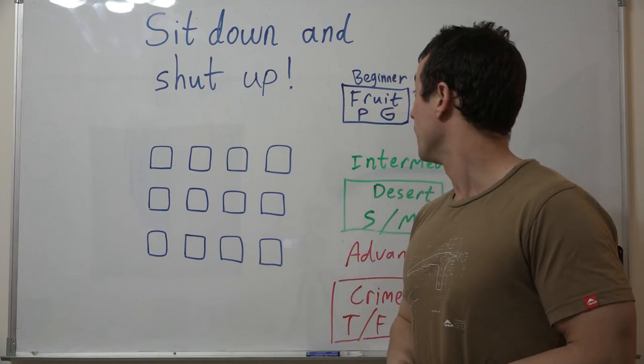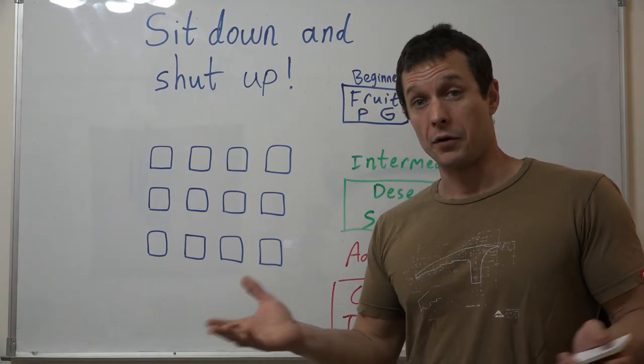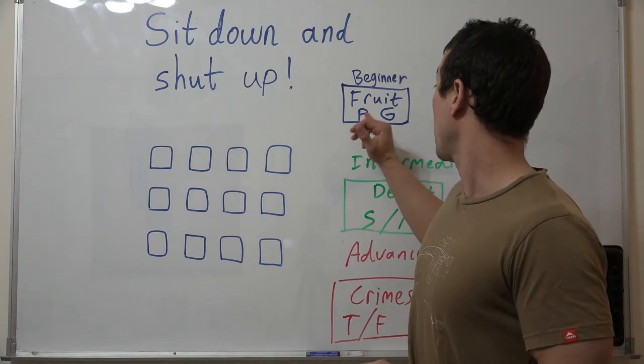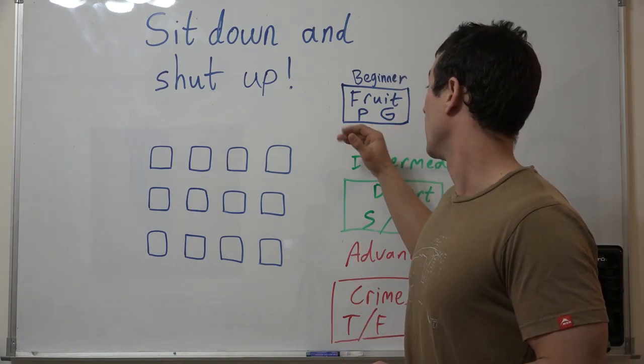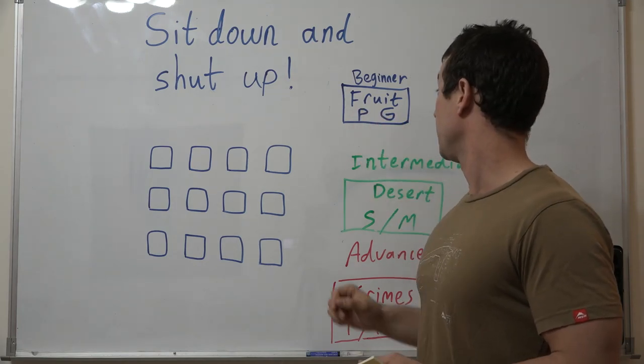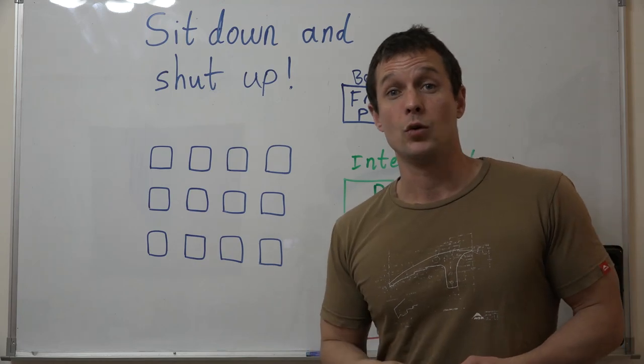For example, for a beginner level I'm gonna find 20 to 30 categories. Okay, fruit - they know fruit, they're gonna know one fruit. Then I'm gonna think what are some other fruits that they know? They know pineapple and they know grapes. I want to test them on those ones so I'm gonna put the P and the G there. I'm gonna do that to about 30 cards.